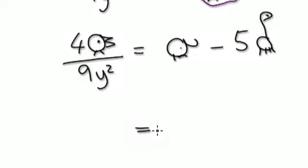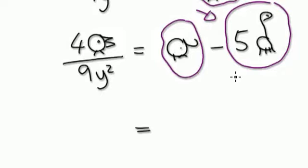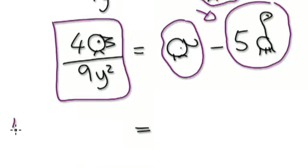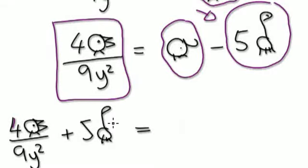So now I've got one thing taking away another thing. I don't want a negative giraffe equals something. So I've got to add five giraffes to both sides. Take this thing down, which is four chickens, add five giraffes, equals elephant.